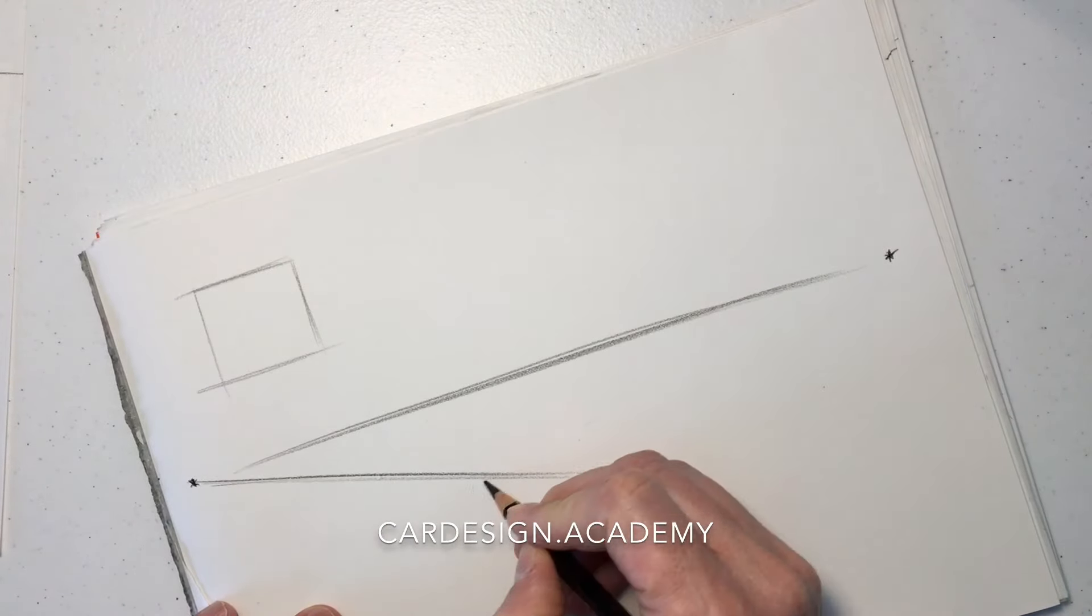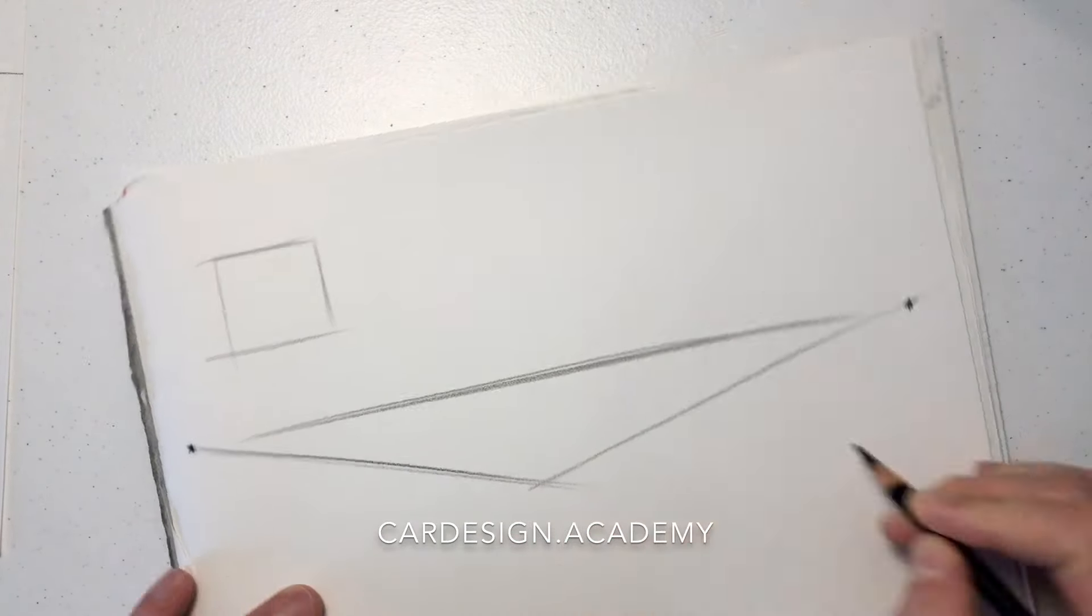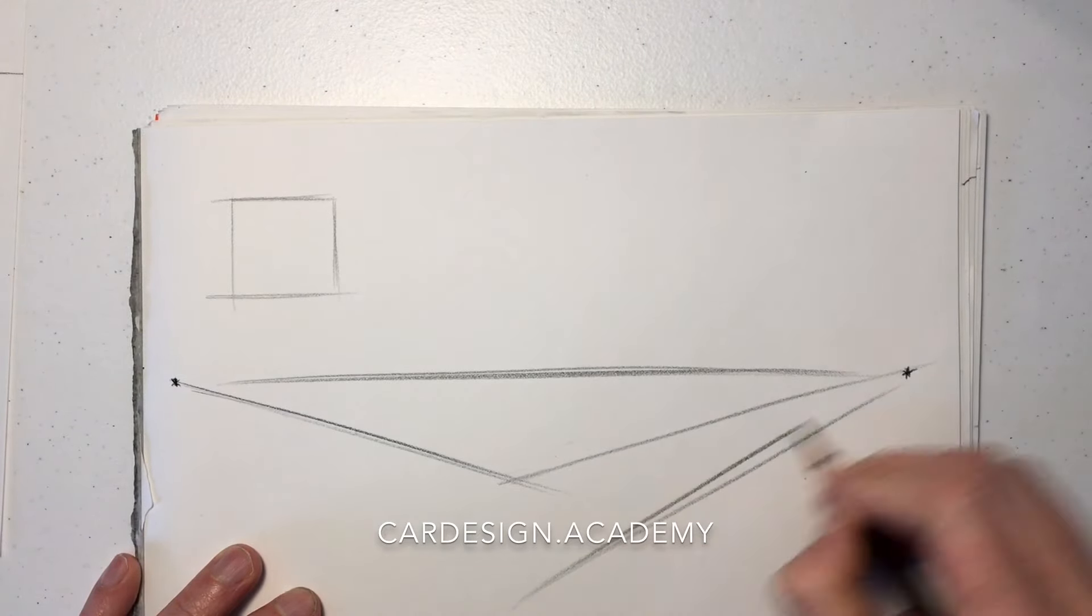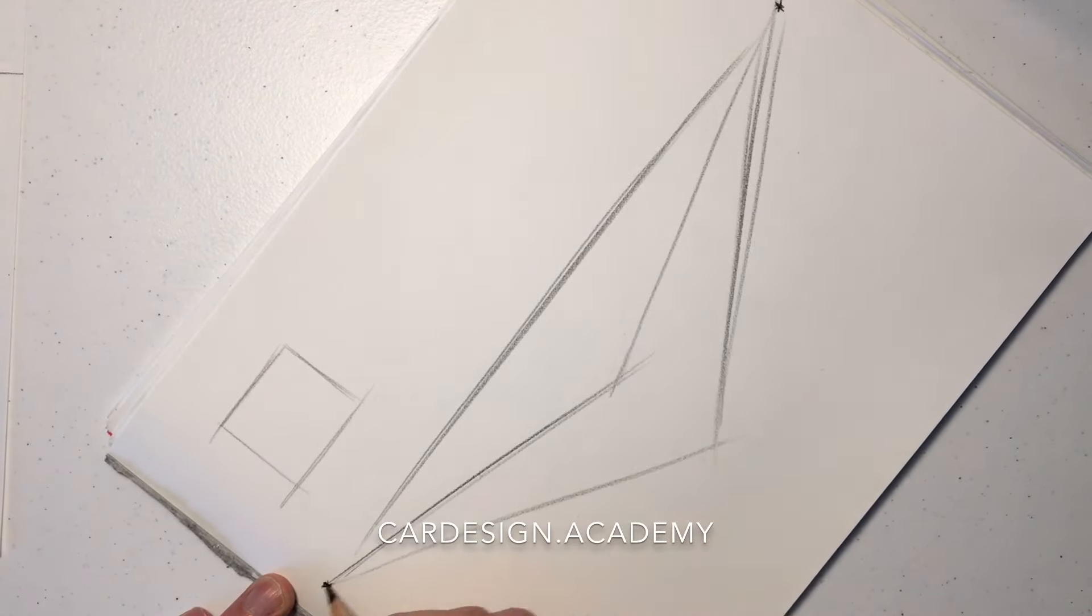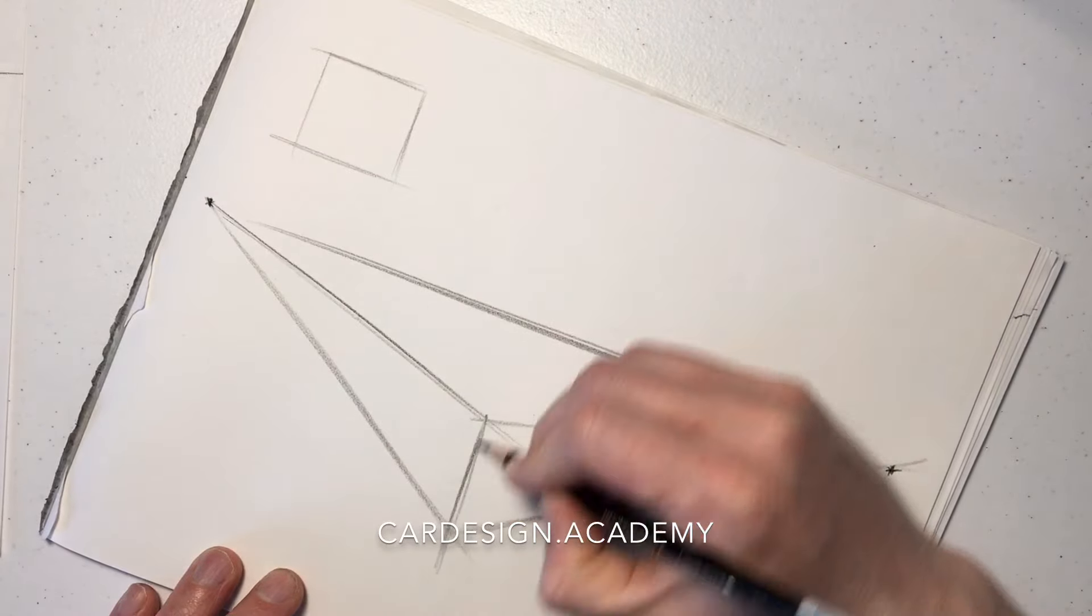We're going to put two vanishing points on either end of this horizon line. We're going to start to draw our cube, extending the edges of that cube all the way to the vanishing points.